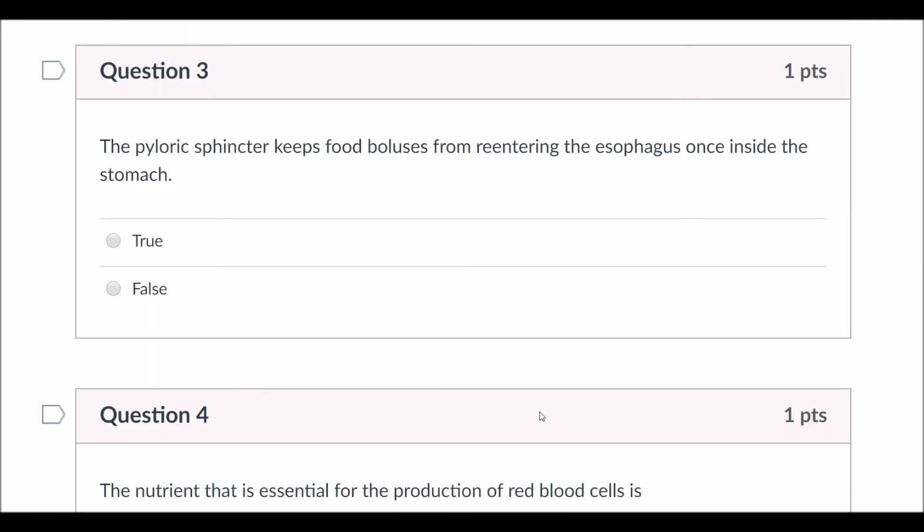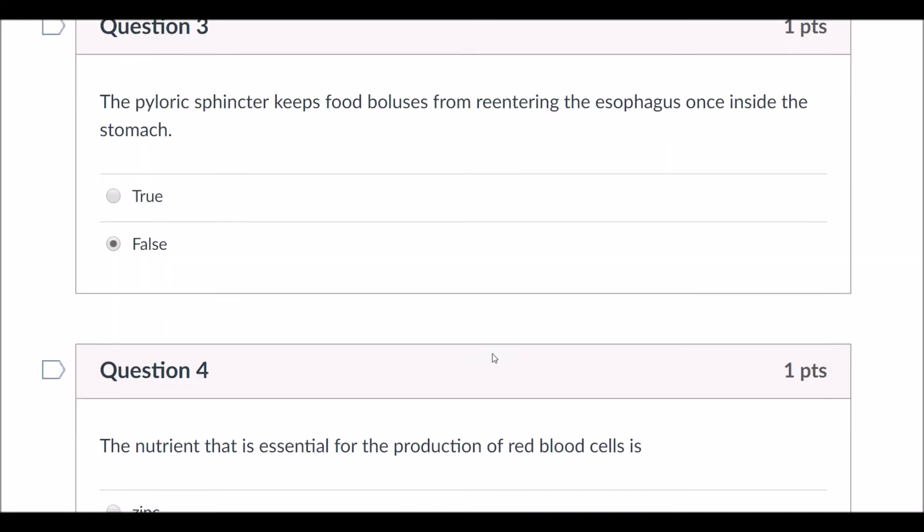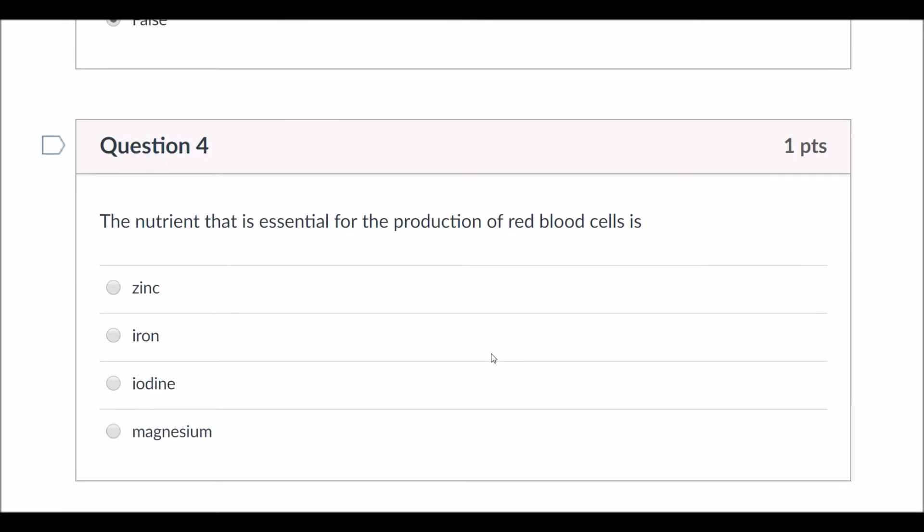Chemical digestion. Yeah, I'd agree. Mechanical is just tearing stuff up, teeth, tongue. True or false: the pyloric sphincter keeps food boluses from re-entering the esophagus once inside the stomach. Is this the pyloric sphincter? What's this sphincter called right here? Esophagus and stomach. This is the cardiac sphincter. Pyloric is the one you pray to. Remember? Oh yeah, now you guys remember. The porcelain god, that's who you pray to. Pyloric sphincter, please work, please stay working.